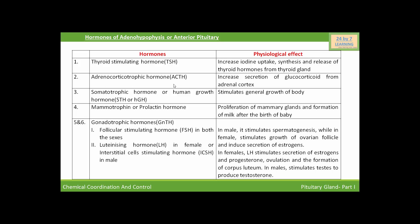Here is the table of hormones of the anterior pituitary. The anterior pituitary produces thyroid stimulating hormone, adrenocorticotropic hormone, human growth hormone, prolactin hormone, and gonadotropin hormones. We will now discuss their physiological effects. Thyroid stimulating hormone increases iodine uptake and the synthesis and release of thyroid hormones from the thyroid gland. It also controls the growth of the thyroid gland.